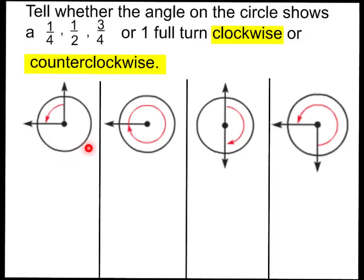Welcome back. For this first one, the arrow is showing a counterclockwise direction — do you see how it's going backwards? So the first thing to note is it's counterclockwise. Dividing the circle into four parts, I can see it made a one-fourth turn counterclockwise. A one-fourth turn also equals 90 degrees.